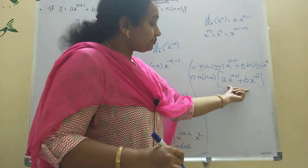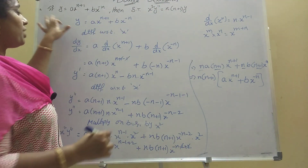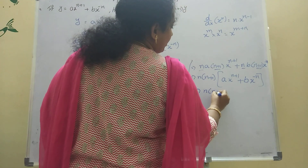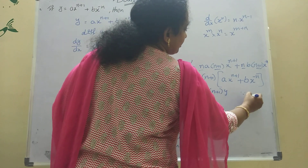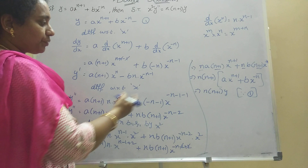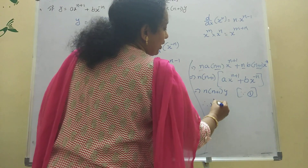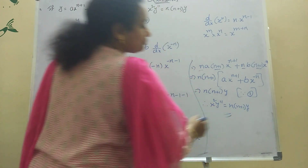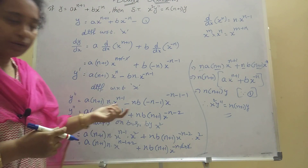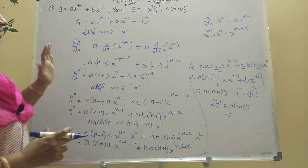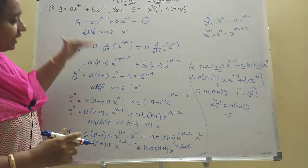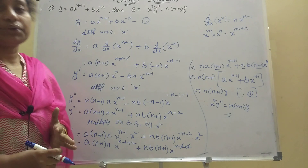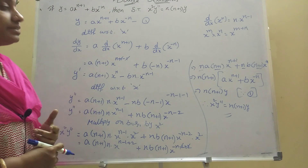The bracket [a·x^(n+1) + b·x^(-n)] is nothing but y, from our original given equation. Therefore x²·y'' = n·(n+1)·y, which is what we needed to prove. This completes the first problem, using only the x^n power rule formula.